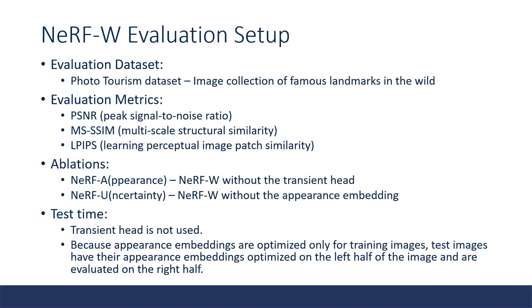NeRF-W is evaluated on the photo tourism dataset on three different metrics that are all representing image quality. In addition to this, NeRF-W has two ablations: NeRF-A which is without the transient head and NeRF-U which is without the appearance embedding. During test time, the transient head is discarded and the appearance embedding is optimized for test images using the left half of the image and is evaluated on the right half.